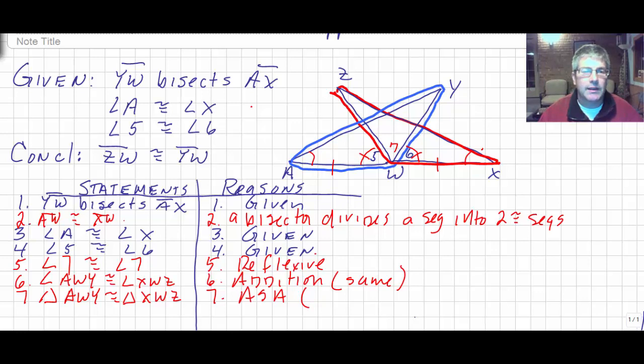And the steps that lead to that are steps 2. That's our side. Our angle is step 3. Angle A is congruent to angle X. Can't use 5 and 6 because those aren't angles of our triangle. But our step 6 here is. So we've got steps 3, 2, and 6. Our angle, our side, and our angle.